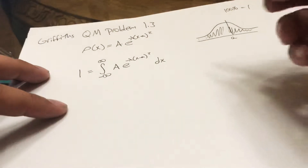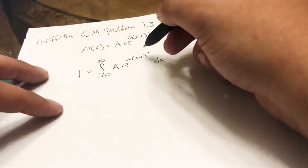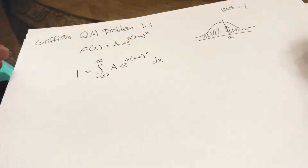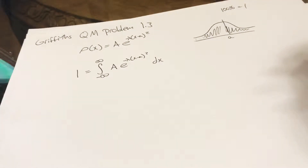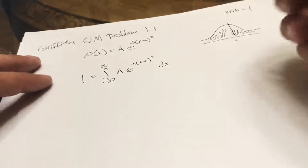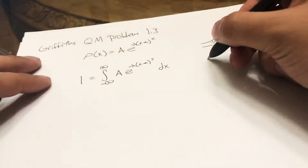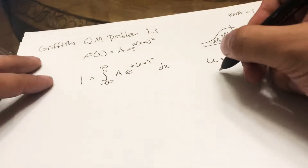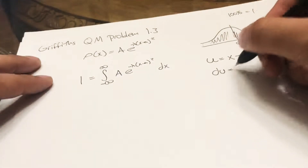All we have to do is solve for A. This class of integral is a very specific one, appropriately named the Gaussian integral, because this is a Gaussian distribution. I'll make another video on how to solve any type of Gaussian integral. We can't solve this straight up, so we do u-substitution: u = x - a, and then the derivative gives us du = dx.